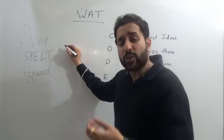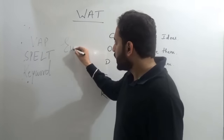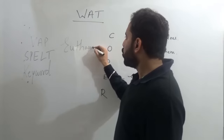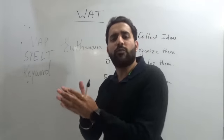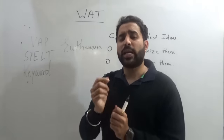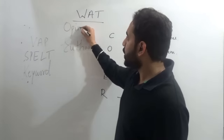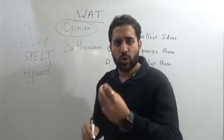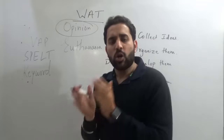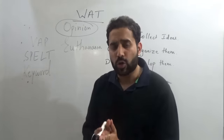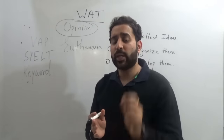Let's take an actual IIM Calcutta VAT topic from last year — the topic given was 'Euthanasia.' Everyone is aware of this topic, but how do you write an essay about it? The most important thing is to highlight your opinion in the VAT. With a duration of 10 to 15 minutes and around 200 to 250 words, in the introduction you should state your opinion clearly and precisely.